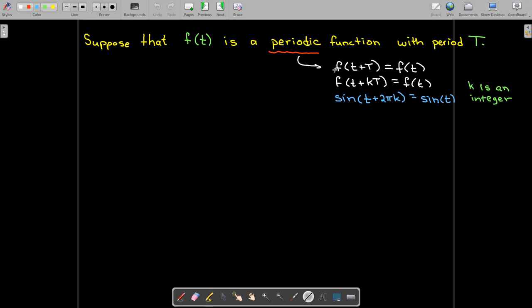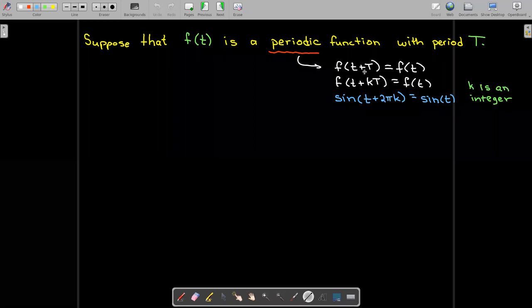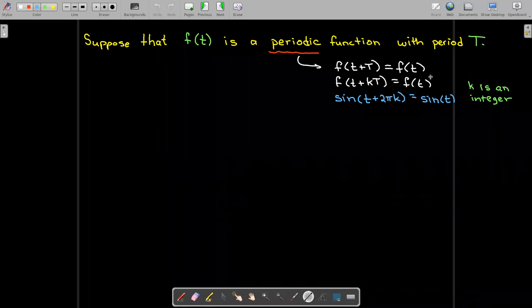If you take t and add a period to it as the input, you'll get the same output as if you had no capital T added to it. In fact, if you add any integer multiple of capital T, you'll still get the same output.